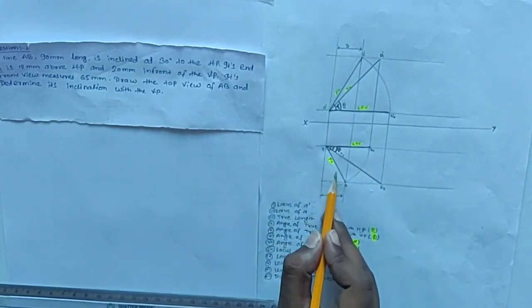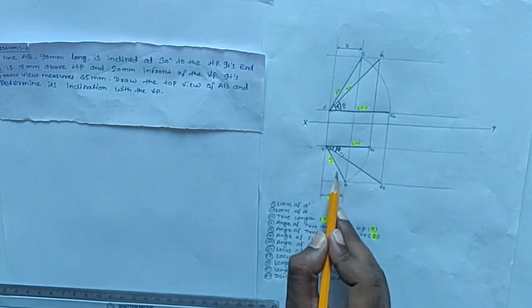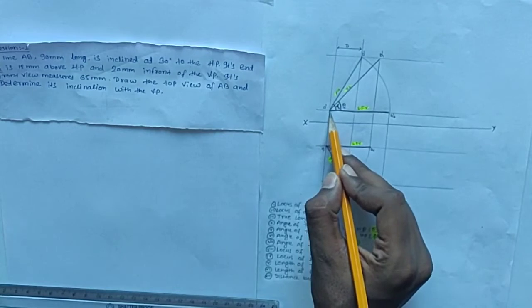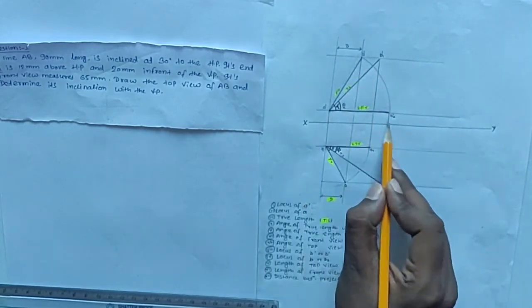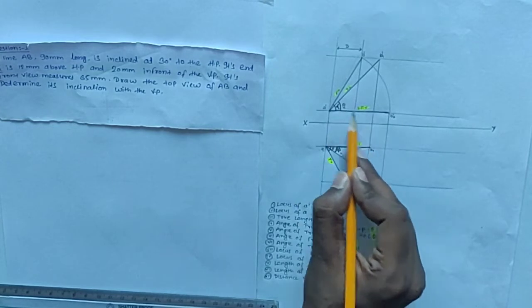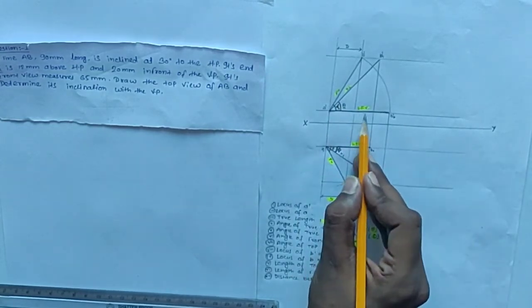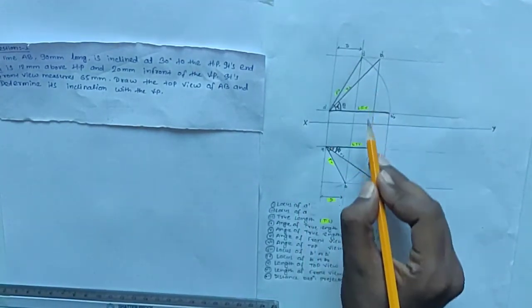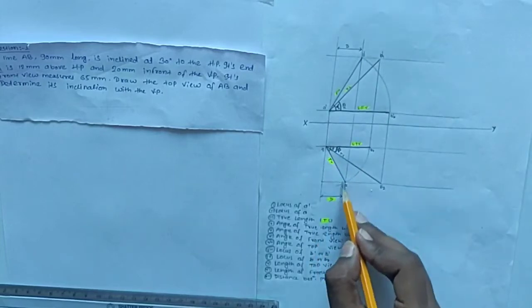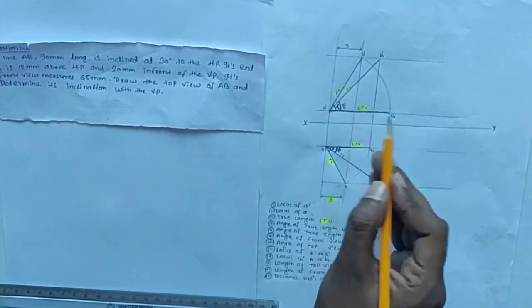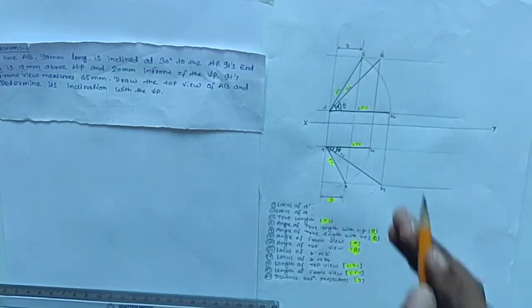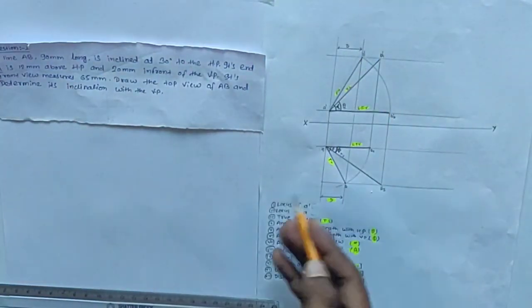The length of top view is the projected length in the top view. The length of front view — this is AB' — is the projected length in the front view, which is 65mm in our problem. The distance between projectors is also one of the 12 data points. These are the 12 data items used in projection of a straight line.